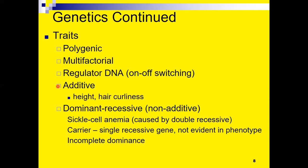Some genetic traits are additive, where the influence of different forms of the gene is added together to produce the ultimate result. A good example is hair curliness: one form of the gene produces curly hair, another produces straight hair. If you get one gene for curly and one for straight, you get something in between — what some people call wavy hair. The effects of those two different genes are sort of averaged out.